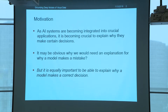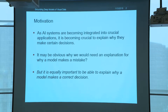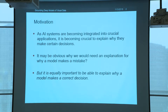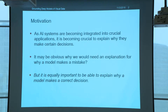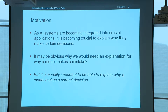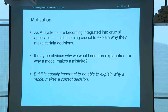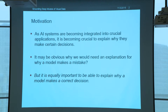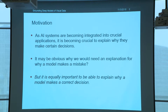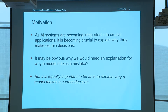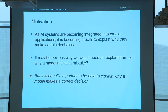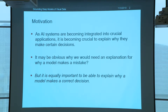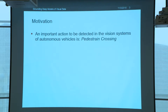As AI systems are becoming integrated into crucial applications, it's becoming crucial to explain why they make certain decisions. It may be obvious why we would like to explain an incorrect decision or why a model makes a mistake, but it's actually equally important to be able to explain why the model makes a correct decision.